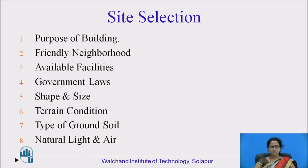The vacant spaces to be left on the sides and front are to be considered, and even the building height should be considered. The shape and size of the building plays an important role in site selection. The terrain condition and type of ground soil — the strata selected should be of a uniform slope, leveled and elevated, so we can provide good and quick drainage for rainwater.